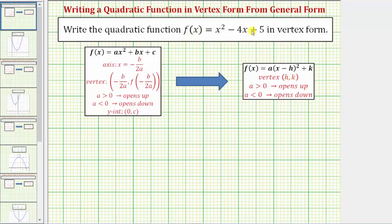Because the quadratic function is in general form as shown here, one method would be to use these formulas to find the coordinates of the vertex and then use those values to write the function in vertex form. Another option would be to complete the square, but for this example, we'll be using these formulas.